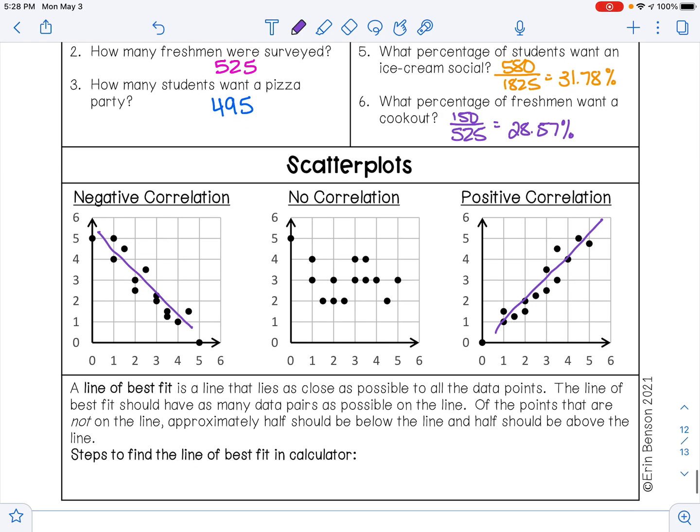A line of best fit is a line that lies as close as possible to all the data points. The line of best fit should have as many data pairs as possible on the line. Of the points that are not on the line, approximately half should be below the line and half should be above the line.